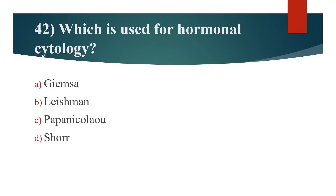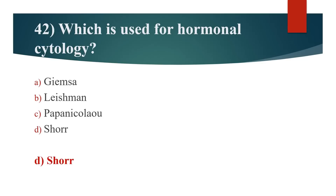42nd question: Which is used for hormonal cytology? Option A: Giemsa. Option B: Leishman. Option C: Papanicolaou. Option D: Shorr. Answer is Option D: Shorr stain.